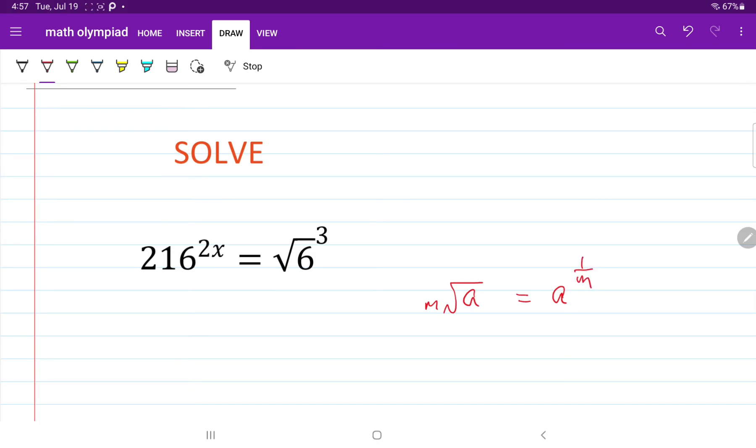Rule number two, a to the power of b raised to the power of c is equal to a to the power of the product of bc.